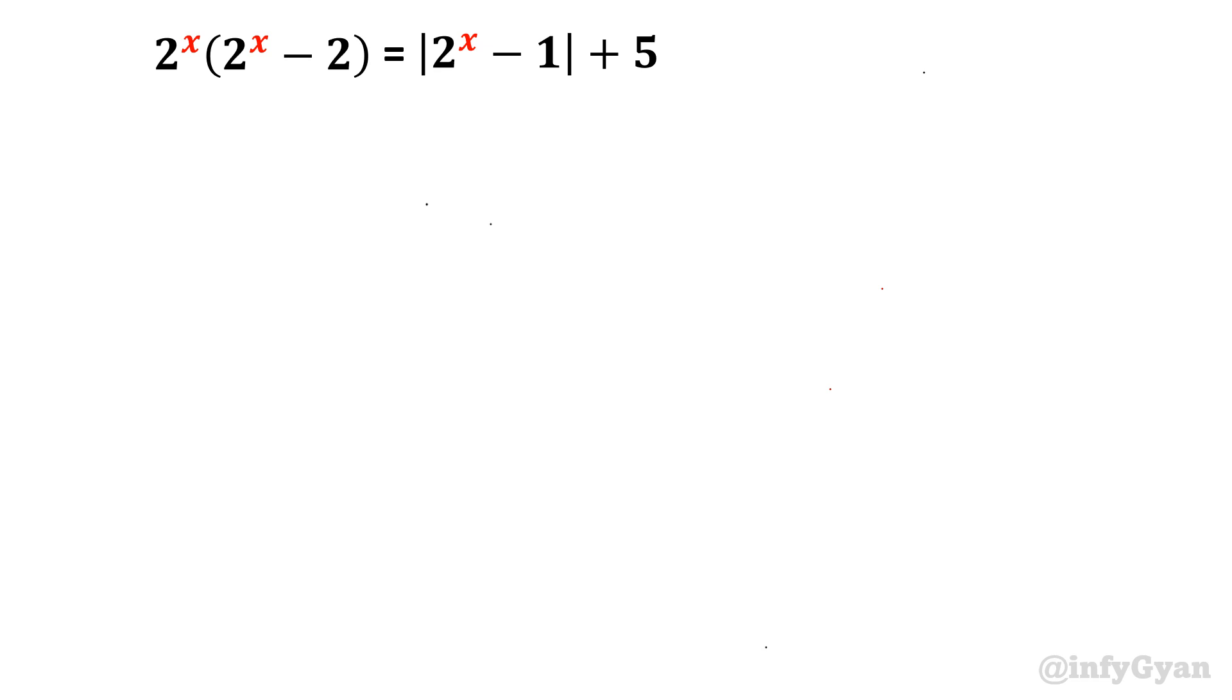The equation is 2 power x, 2 power x minus 2 equal to 2 power x minus 1 modulus plus 5. So absolute value function is there. That is special about this question. So we will see that modulus function also. But how we will start this problem?